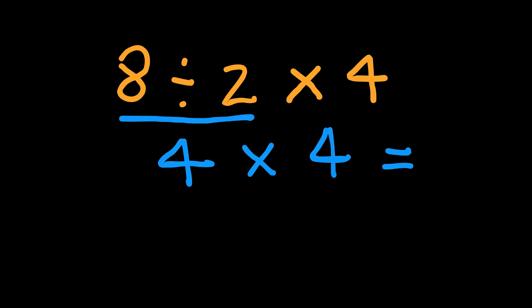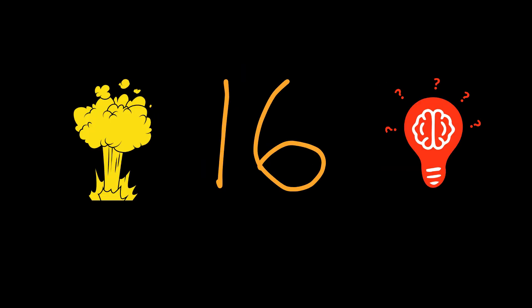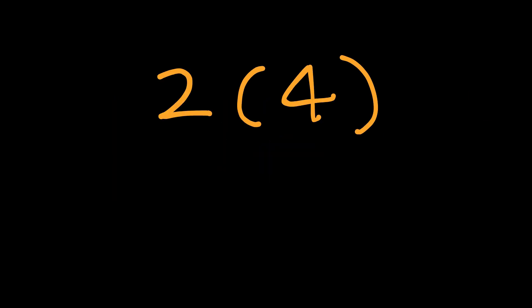Let's do that. 8 divided by 2 times 4. Then, 4 times 4 equal 16. So, by the correct order of operations. The answer is 16. But wait. Why do so many people still get 1? Or why do so many people still say it's 1? Great question.